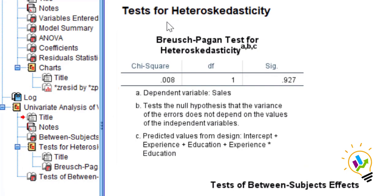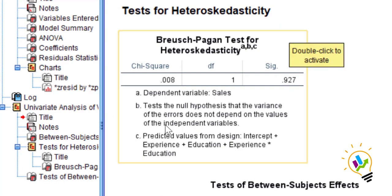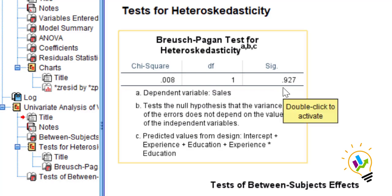In the output screen, we can see the Test for Heteroscedasticity. The null hypothesis states that the variance of the error does not depend on the values of the independent variables — meaning there is no relationship between residuals and the independent variable.